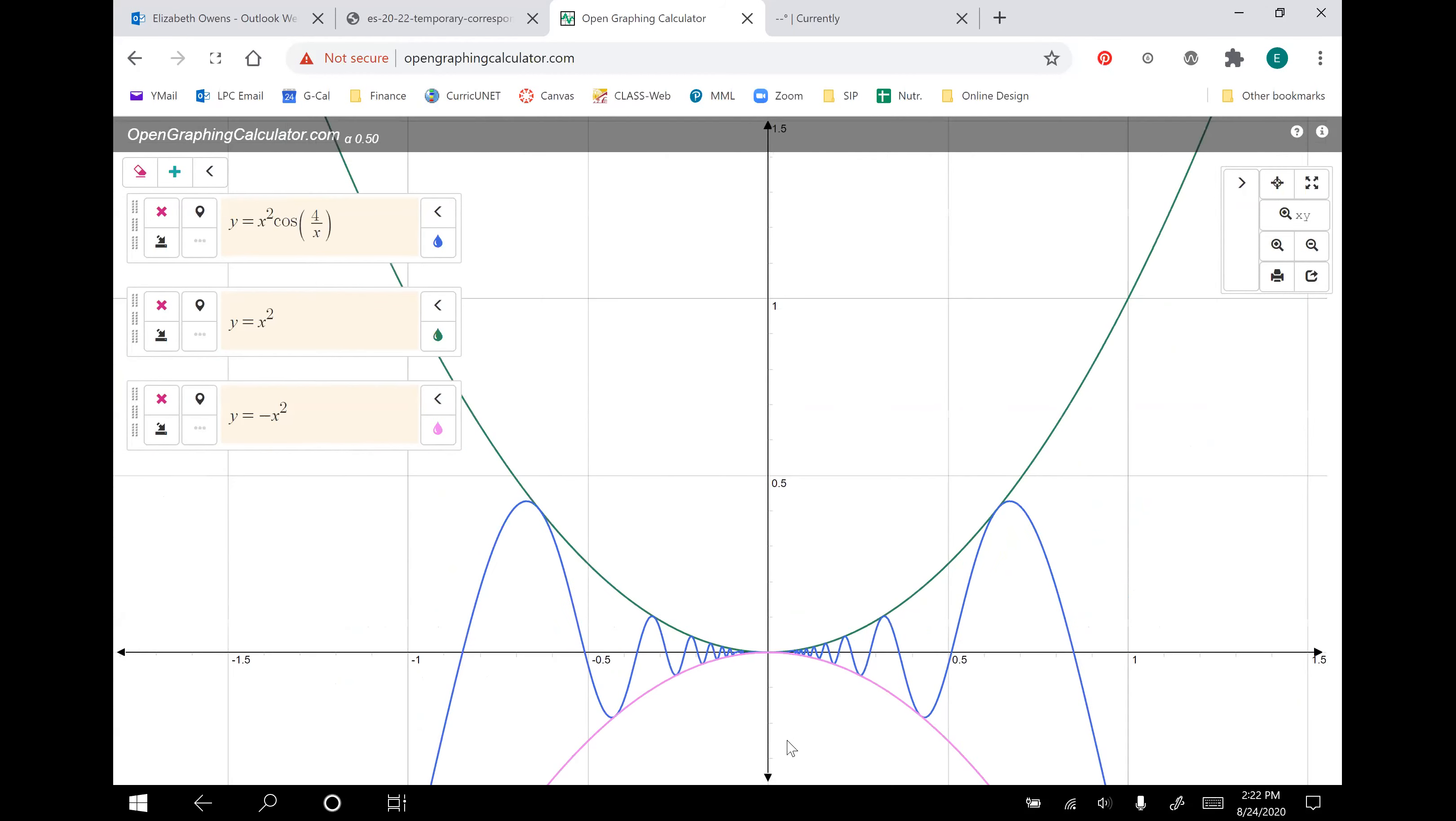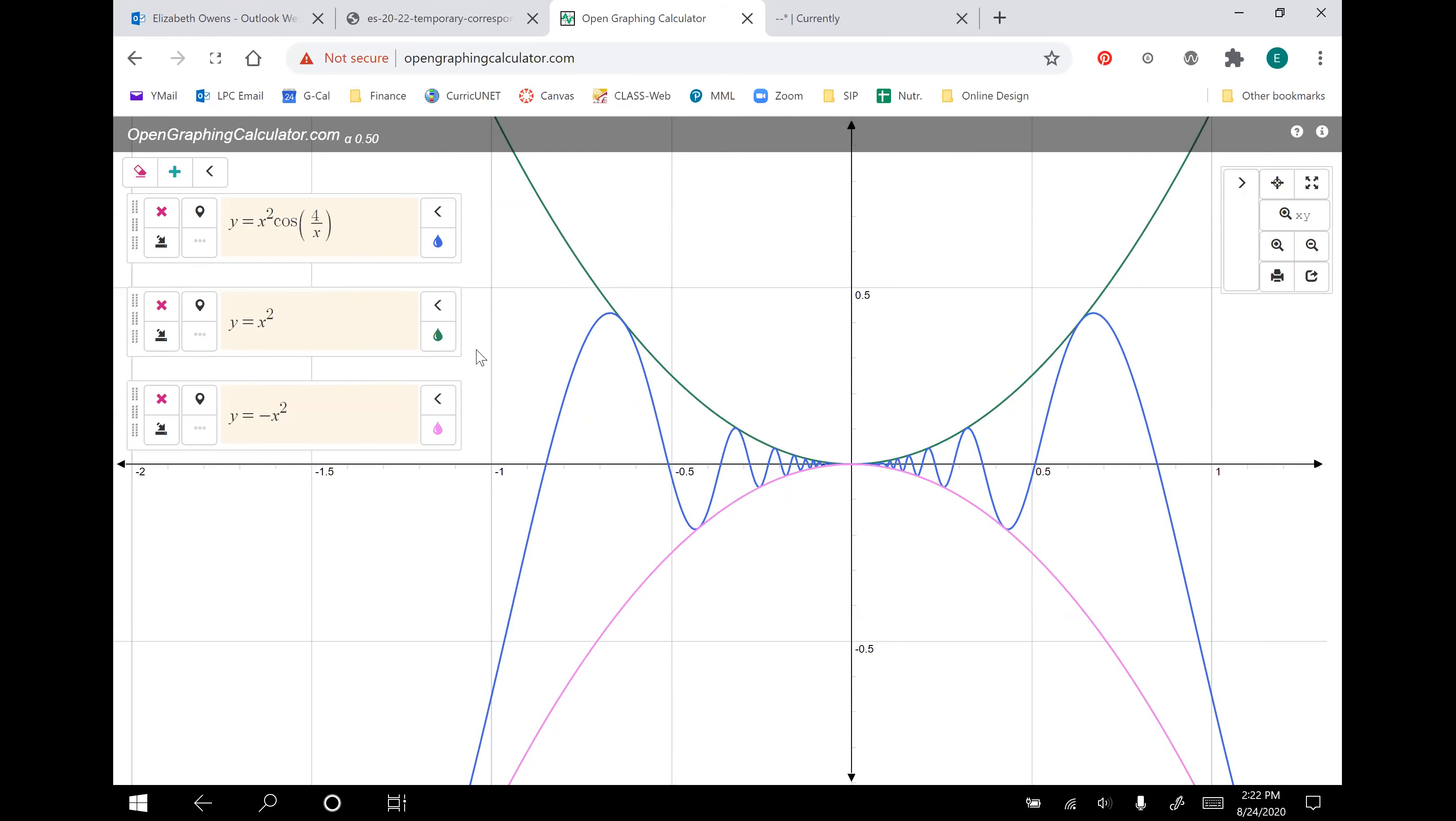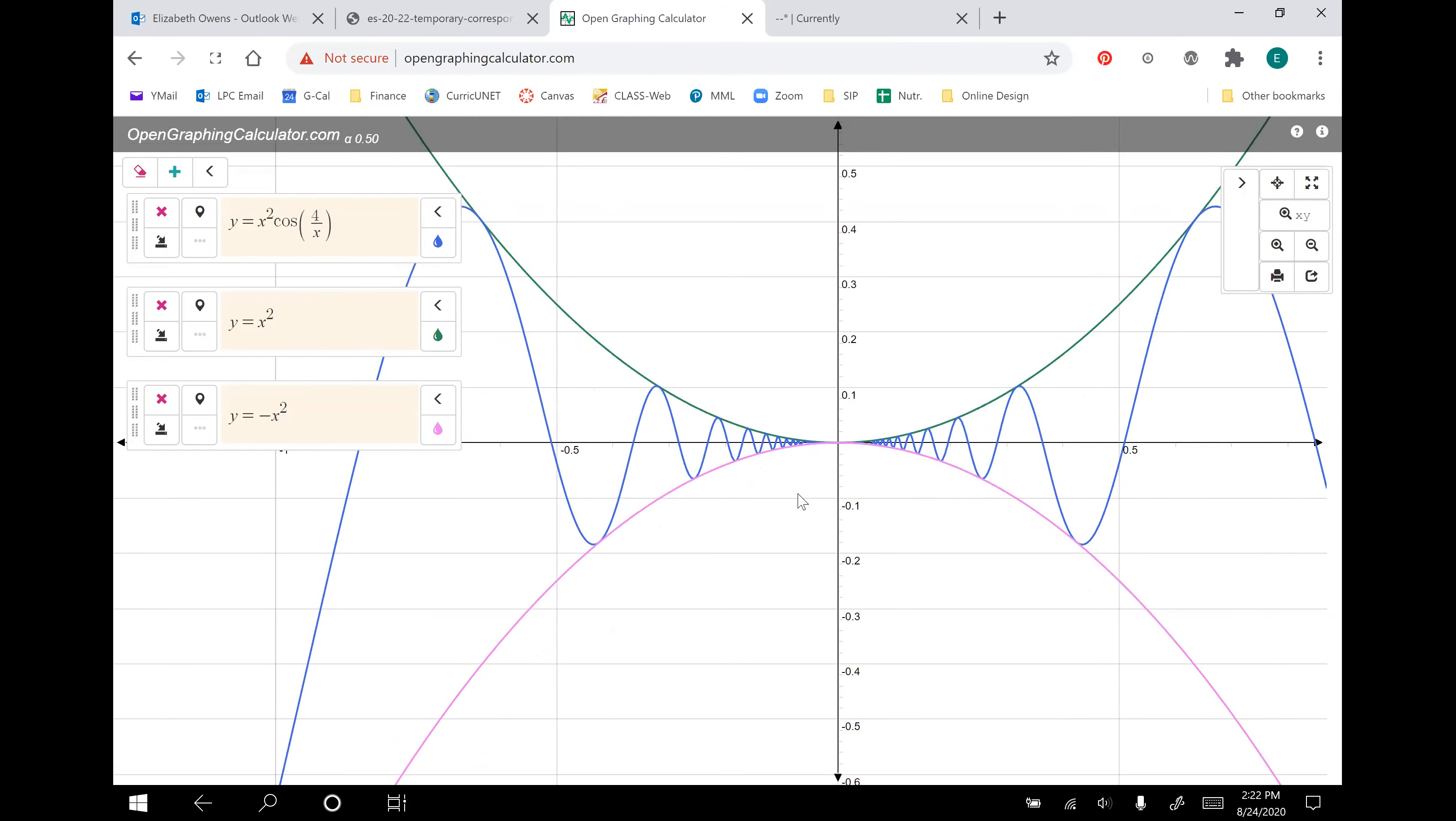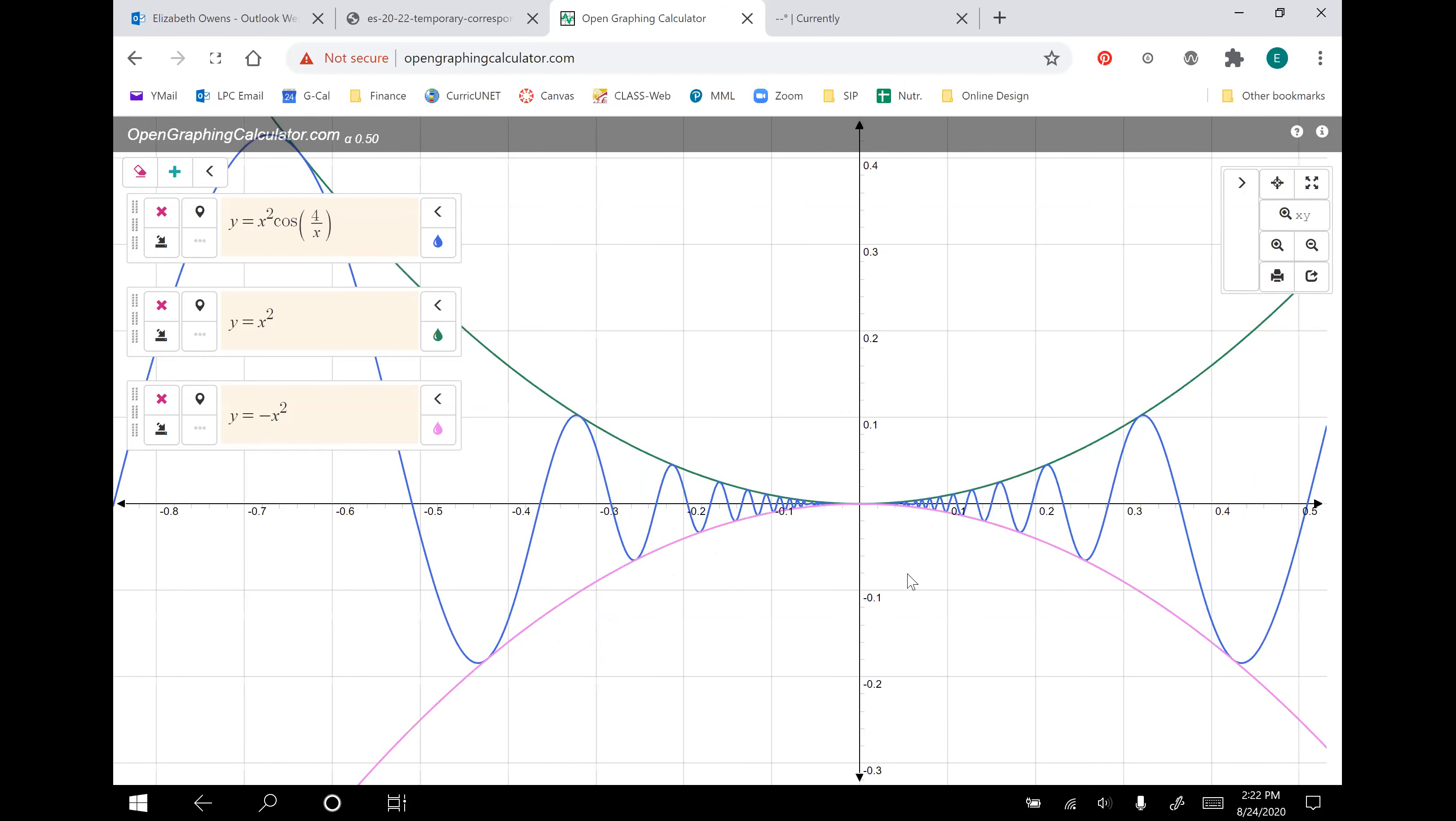We also have our sandwich graphed in here. Positive x squared is the parabola above shown in green. Negative x squared is this parabola down below shown in pink. And you can see that as we get close to x equals zero, the blue function f of x stays solidly in between those two boundary functions.